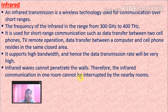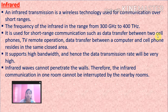Infrared is used for very short range data transmission. Its frequency range is 300 GHz to 400 THz. It is used for data transfer between two cell phones, TV remote operation, data transfer between a computer and a cell phone, and also for handling music systems with a remote.